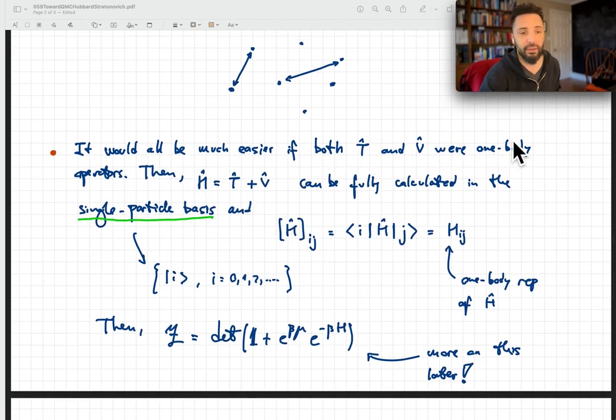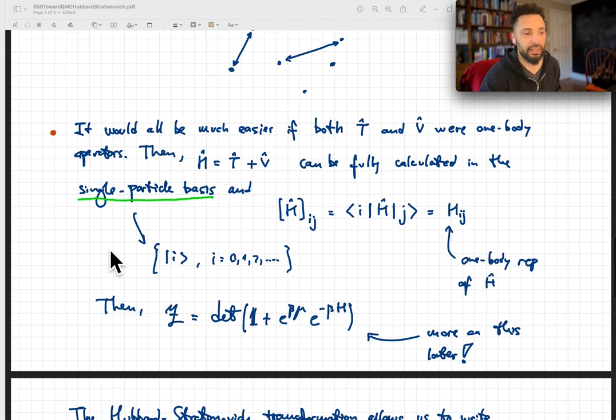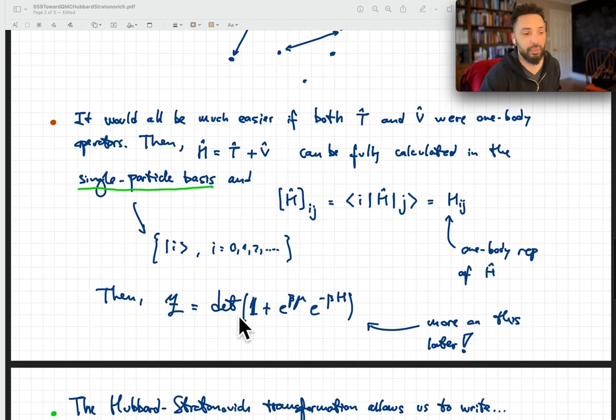Because both T and V are one-body operators, there's nothing else. There's no other physics that we need to worry about. And it turns out that in that case, the partition function is simply the determinant of one plus e to beta mu, e to minus beta H, where this H is now the Hamiltonian matrix. I'm assuming here that these are fermions. We'll talk more about this in a future video.